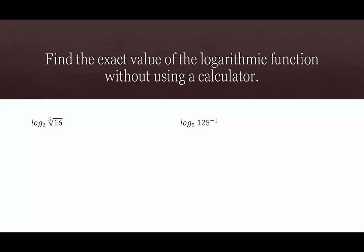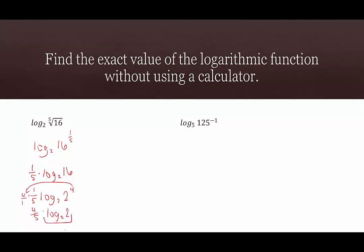We have log base 2 of the fifth root of 16. First, get rid of the radical by rewriting it as an exponent: log base 2 of 16 to the 1/5. Move the 1/5 out in front as the coefficient: 1/5 times log base 2 of 16. We're not done yet because we haven't evaluated log base 2 of 16. Since 16 is 2 to the fourth, we write log base 2 of 2 to the fourth, pull the 4 out front, and multiply: 4 times 1/5 is 4/5. So we have 4/5 times log base 2 of 2, and log base 2 of 2 is 1, giving us 4/5.